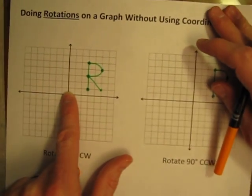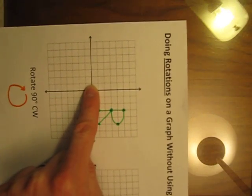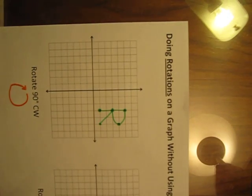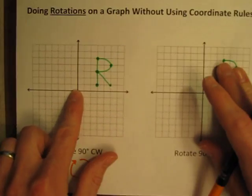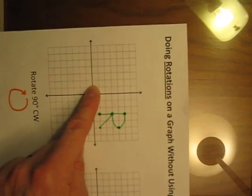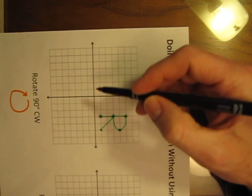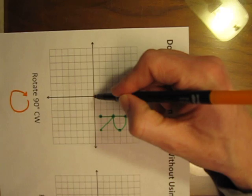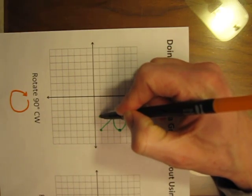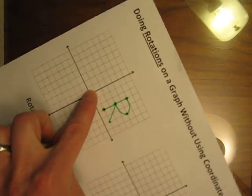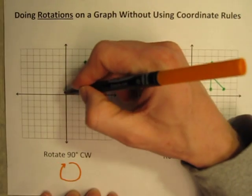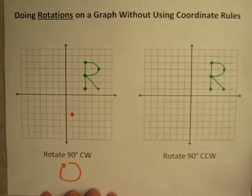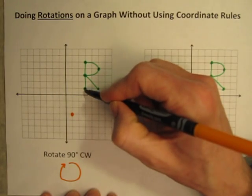The letter R is here. After you rotate it 90 degrees clockwise, it will be down in this quadrant and it will look exactly like this. So that is your 90 degree rotation. How do you draw it? Let's start with this point here — it's 1 to the right from the origin, and 1, 2, 3 down. So if we turn our paper back, let's start at the origin, go 1 to the right, 1, 2, 3 down, and there is our new point. This point rotates to there.